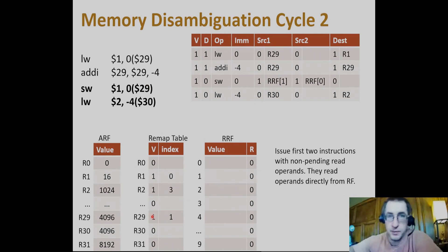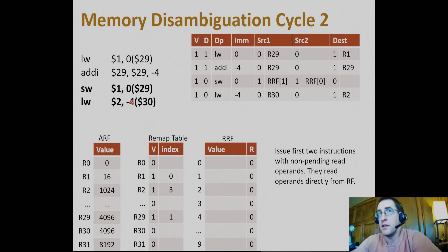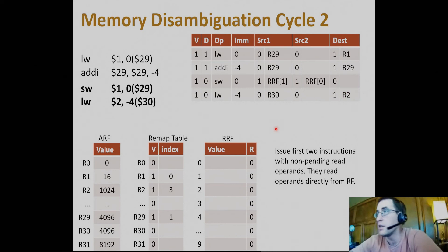The store word has immediate zero and is waiting to read from rename register file entry one — R29 has a valid remap entry with index one, so rename register file entry one is the new name for R29. Its other source operand is $1, which has been renamed: remap table entry for register one is index zero, so rename register file zero is the new name for $1. Store words don't update any registers, so there's no destination. The last load word has immediate negative four, reads register 30 (ready, not pending), and writes to R2.